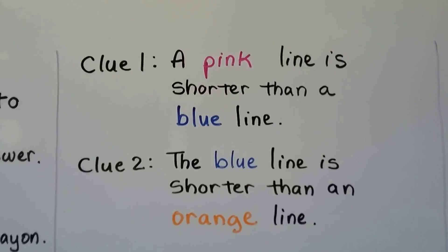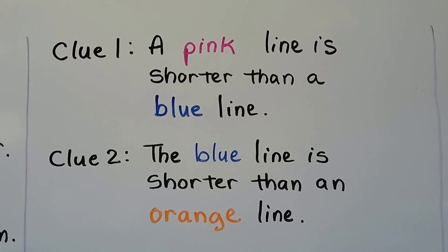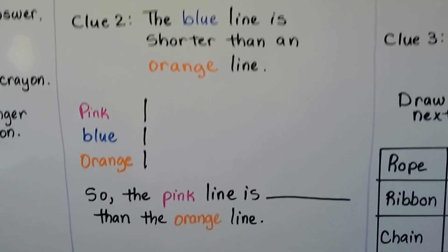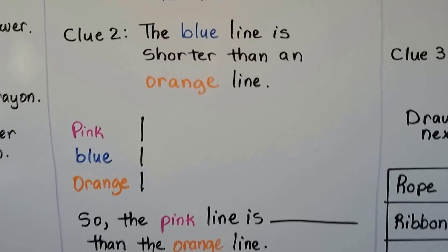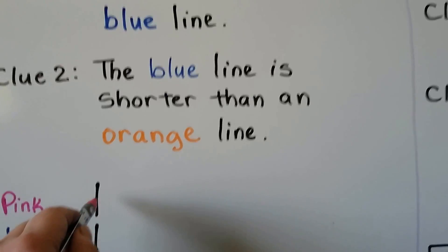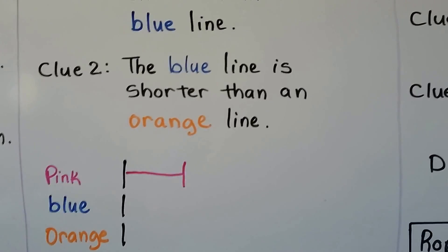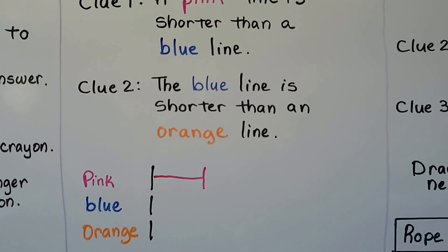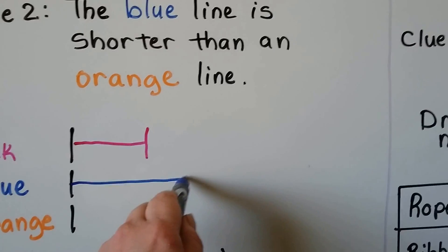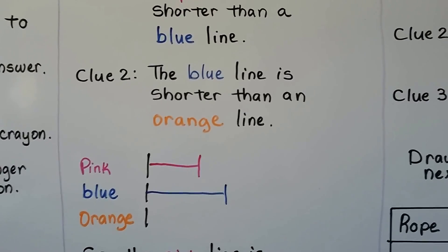Here we have another one. Clue 1 says a pink line is shorter than a blue line. Clue 2 says a blue line is shorter than an orange line. We can draw the lines and fill in the blank — shorter or longer. A pink line is shorter than a blue line, so we draw the pink line, knowing it will be shorter than the blue one. We make the blue line a little bit longer so the pink one is shorter.